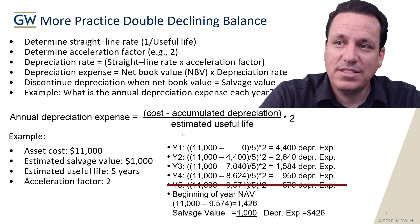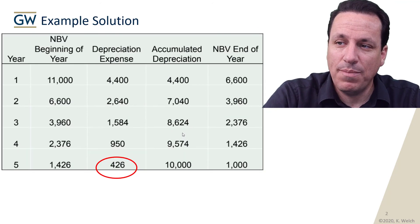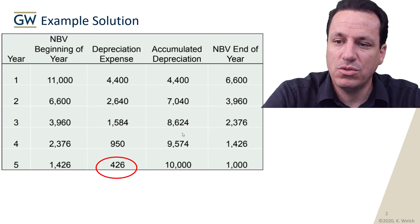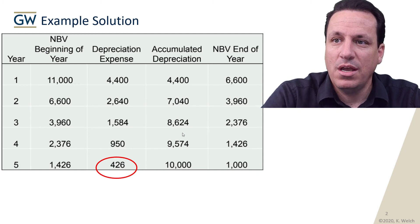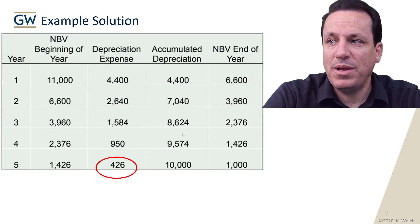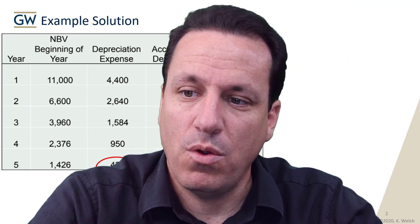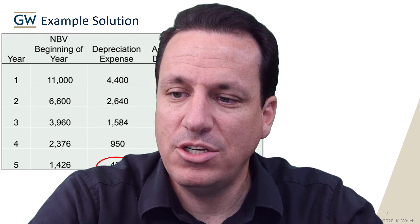That's another example of double declining balance, showing each point of entry associated with the purchase, depreciation expense, and accumulated depreciation. You can review this based on the formula from the prior page. Thanks for coming to class.